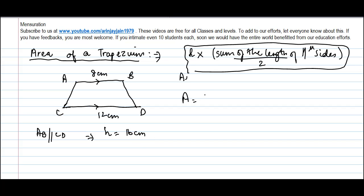Then the area of the trapezium will be equal to 16 into sum of the length of the sides 8 plus 12 divided by 2, or 16 into 20 divided by 2, or 16 into 10 is equal to 160 centimeter square.